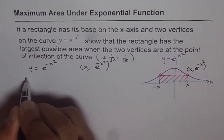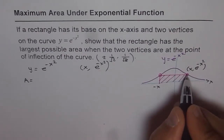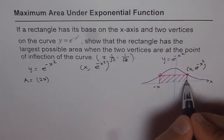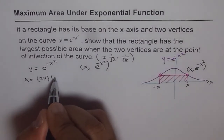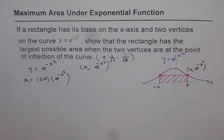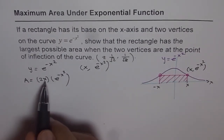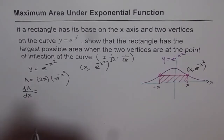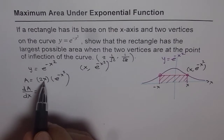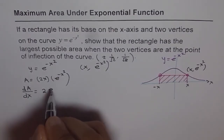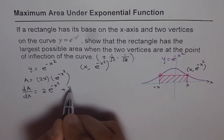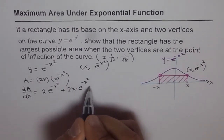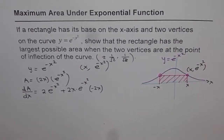What is the area of the rectangle? The area of a rectangle is length times width. The length is from minus x to x, which is 2x. The width is the y value, which is e to the power of minus x squared. So the area A equals 2x times e to the power of minus x squared. This area is a function of x, so we can find the derivative with respect to x. Applying the product rule, dA/dx equals 2 times e to the power of minus x squared plus 2x times e to the power of minus x squared times minus 2x.